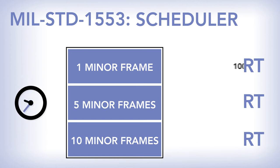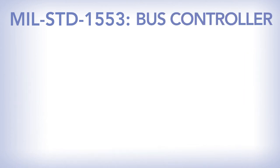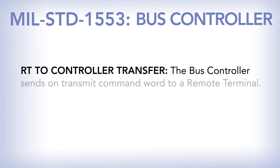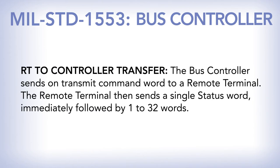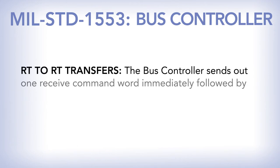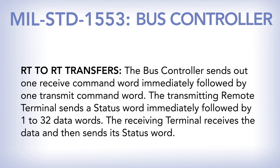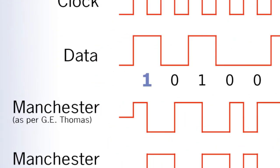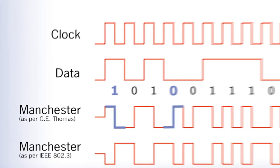Let's take a look at some of the common commands transmitted by the bus controller, including the sequence of events for a BC to RT command and for an RT to BC command. If we actually take a look at the signal on the bus, looking at the lower two lines, you'll see the bits are half high and half low. This is known as Manchester encoding.